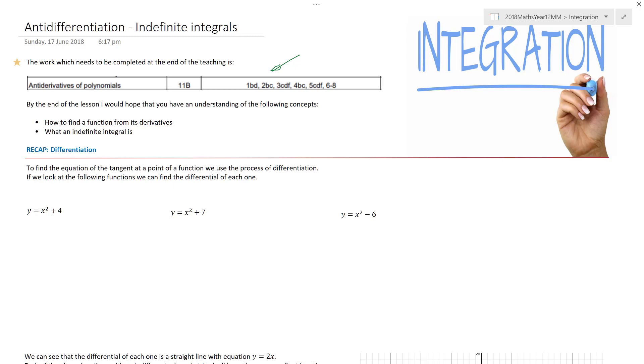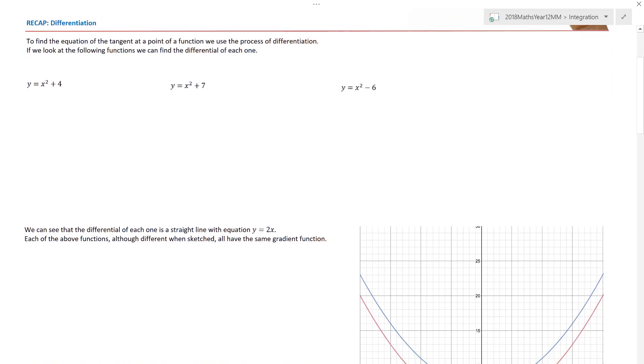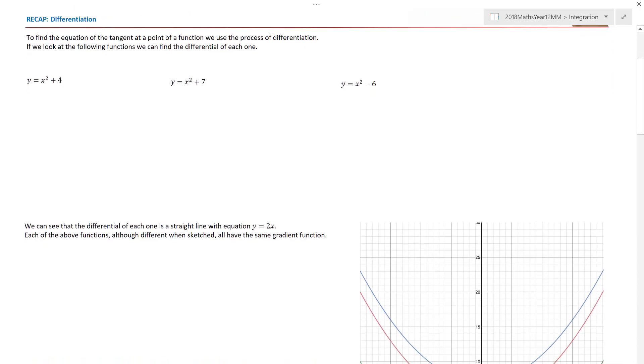But before we rush, let's just go back and do a little bit of a recap for differentiation. Now, if you remember, differentiation is about finding the gradient of the tangent at a point on a function. All right, that's literally all it is. And it's a great little process. You multiply the coefficient by the power and then take one from the power, basically, long story short.